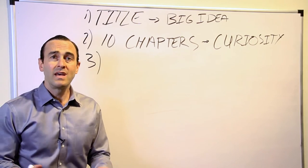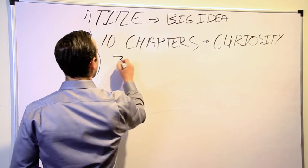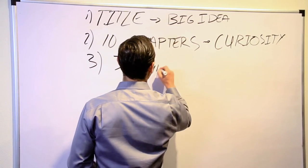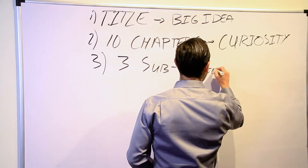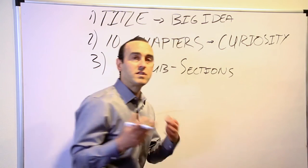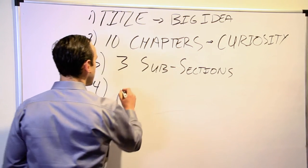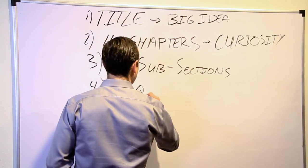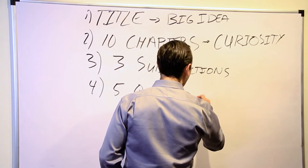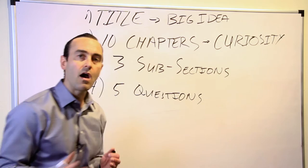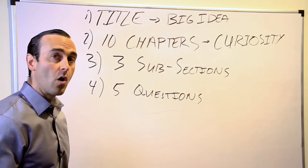Now what you're going to do is come up with three subsections for each chapter. Three subsections. Very simple. I got 10 chapters. I'm going to break down each chapter into subsections. And there, I'm going to break it down even further. For each subsection, you want five questions. You're going to write down five questions. Now you see, you're not even writing a book here. You're just outlining it because the outline is the most important part of the book before you go and write it.